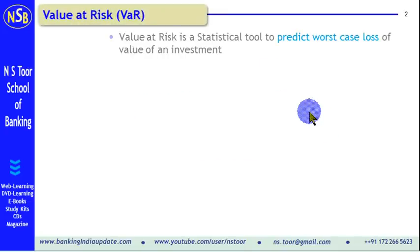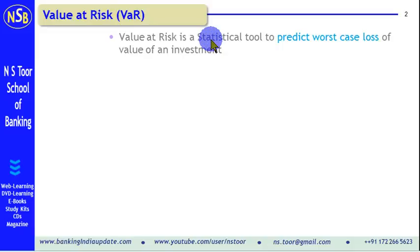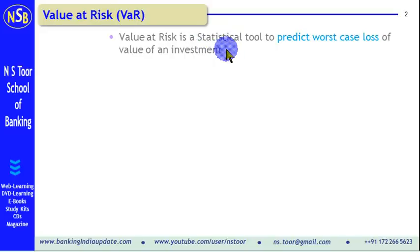Value at Risk is a statistical tool used to predict the worst case loss in the value of an investment. All investments in shares and securities carry risk because of market conditions. Value at Risk predicts what could be the maximum loss — the worst case loss — in the value of an investment.